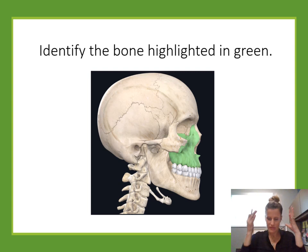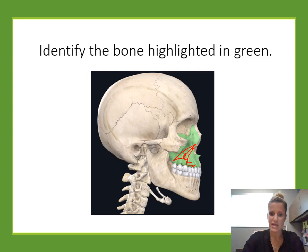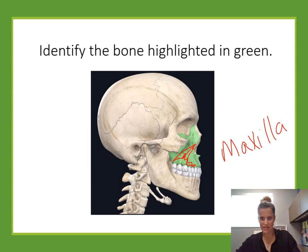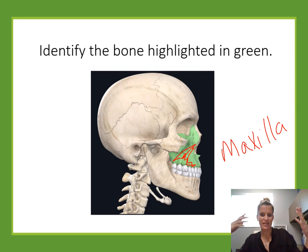Identify the bone highlighted in green. We're looking at the skull, and this bone highlighted in green is the bone that forms the upper jaw. The upper jaw is the maxilla. The two jaw bones both start with an M, so don't get them confused. Maxilla is the top, mandible is the bottom. I remember that because 'max' is like the highest, so the maxilla is the top one.